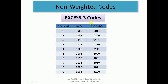Now we will discuss XS3 codes. These XS3 codes are not dependent on weights. The decimal numbers 0 to 9 are written as binary coded digits in 4 bits. XS3 codes are designed by adding 3 to each BCD code. For example, BCD code for 0 is 0000; adding 3 gives 0011. BCD code for 1 is 0001; adding 3 gives 0100. Like this, all XS3 codes are designed. This is another example of non-weighted codes.